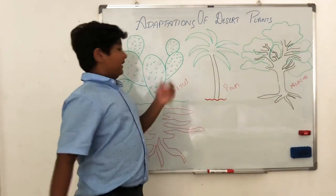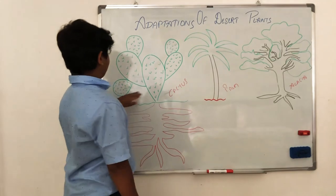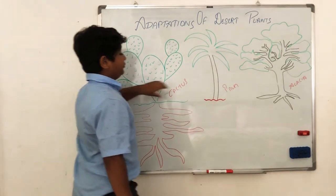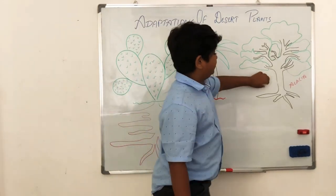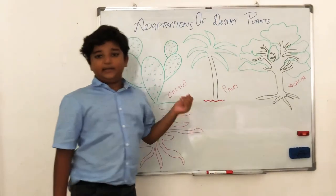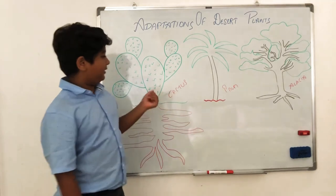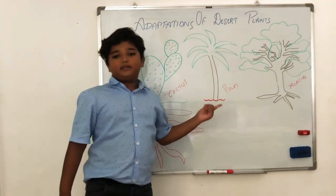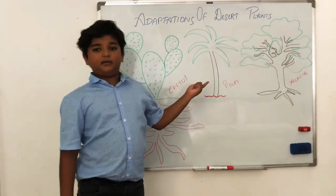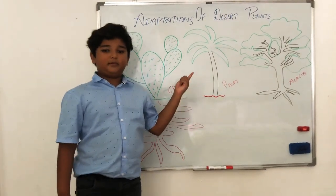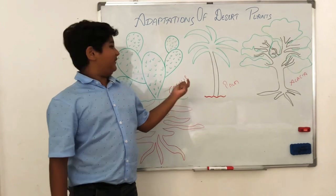Since we are done with the cactus, let's move on to palm. Palm and acacia have mostly similar adaptations to each other.